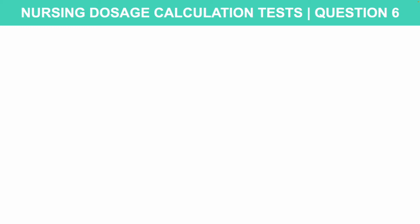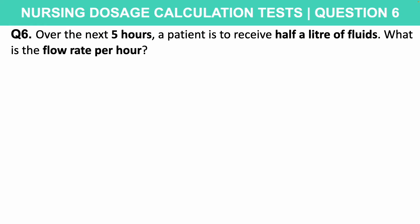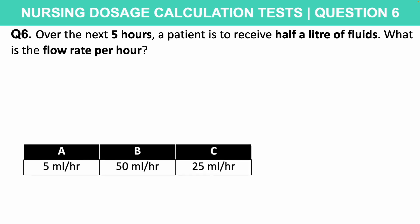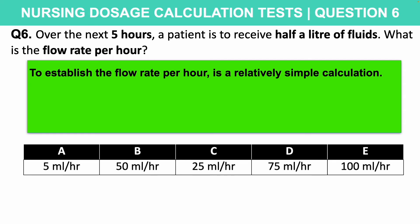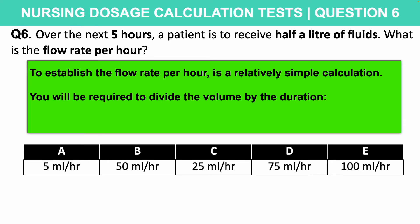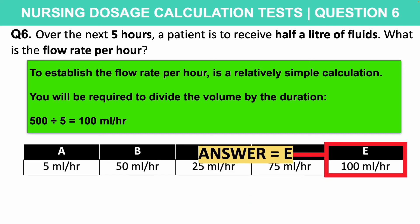This first question is based on flow rates per hour. Over the next five hours, a patient is to receive half a litre of fluids. What is the flow rate per hour? Is it A: 5 ml/hr, B: 50 ml/hr, C: 25 ml/hr, D: 75 ml/hr, or E: 100 ml/hr? To establish the flow rate per hour, divide the volume by the duration. So 500 millilitres divided by 5 hours equals 100 millilitres per hour. The correct answer is E: 100 millilitres per hour.